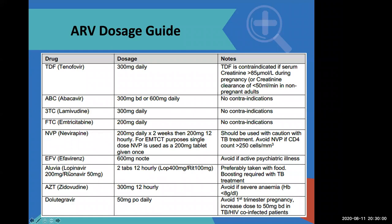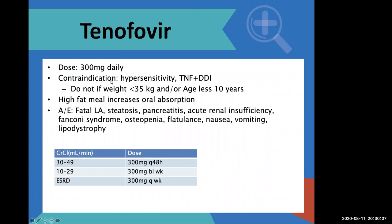Before you give efavirenz, you have to check if your patient does not have active psychiatric illness. Where you cannot give both efavirenz and dolutegravir, you have the option to use either nevirapine or lopinavir/ritonavir. Tenofovir is 300 mg daily — it is our preferred drug; however, we cannot give it if the weight is below 35 kgs, age is less than 10 years, or if the patient has renal problems with low creatinine clearance.